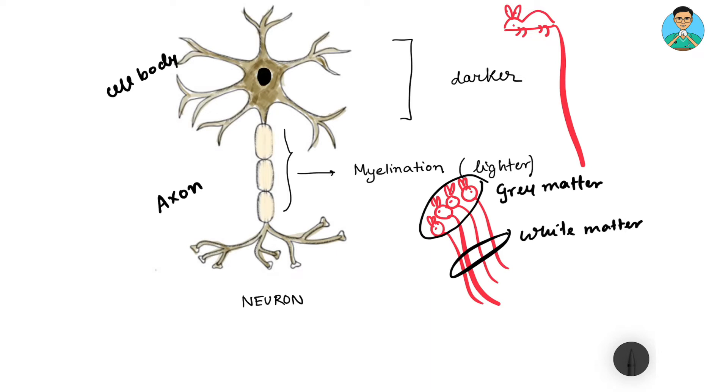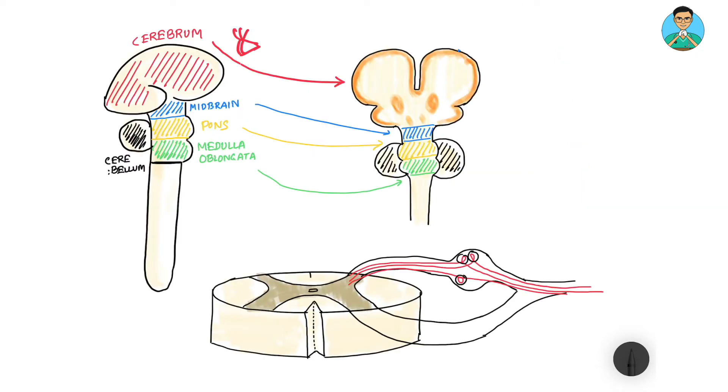This arrangement of bundles of axons represents the white matter in the CNS. This white matter communicates between different gray matters of the central nervous system. The central nervous system is a 3D structure.